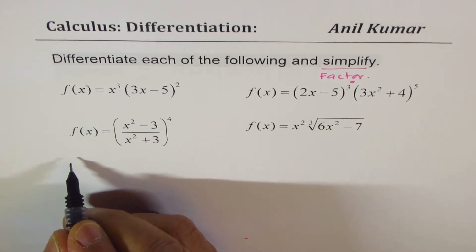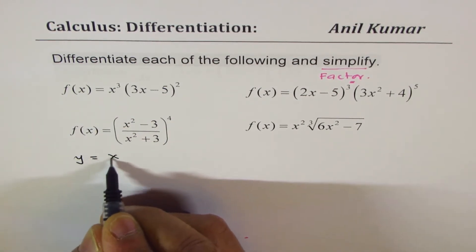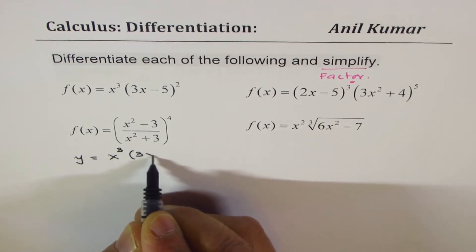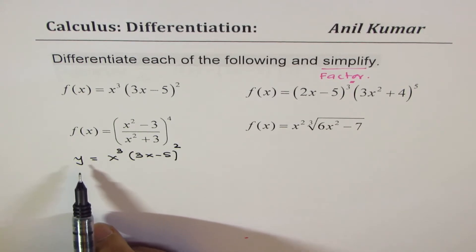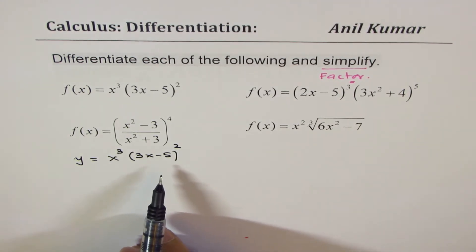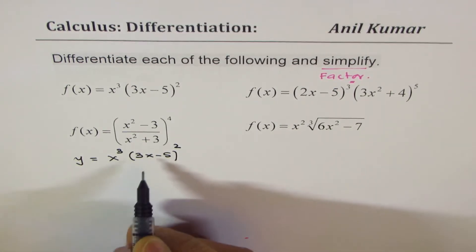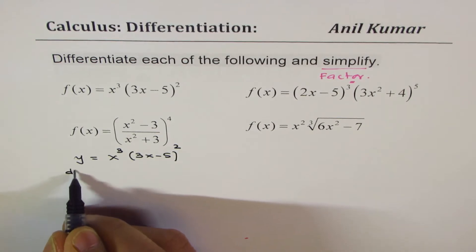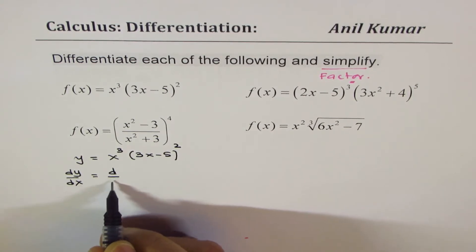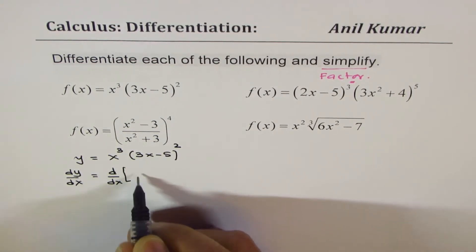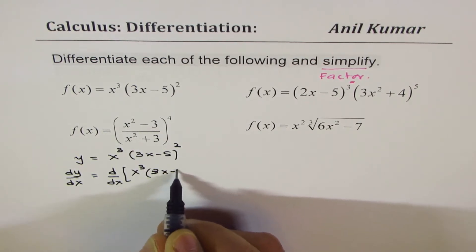So the very first one here — let me write in terms of y. So I say y equals to x cubed times 3x minus 5 whole squared. I'm writing purposely in terms of y because I want to use Leibniz notation, that helps you to exactly show what is going on. So I'll differentiate both sides with respect to x. Here we have to apply the product rule, so we'll differentiate the whole thing with respect to x.